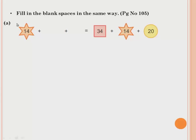Fill in the blank spaces in the same way. Here: 14 plus dash plus dash equals 34 plus 14 plus 20. Since 14 is already on both sides, the two missing numbers on the left are 34 and 20. So 14 plus 34 plus 20 gives the same total. You add the left side, add the right side — if both are equal, we say they are equal.